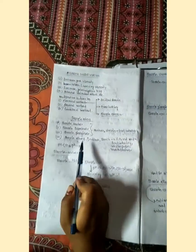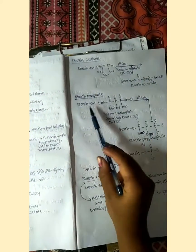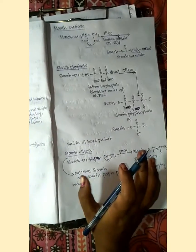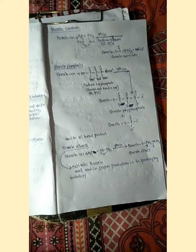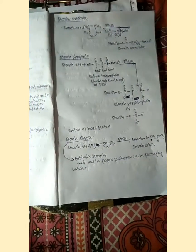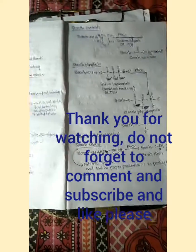So all are complete: starch acetate completed, starch succinate completed, starch phosphate completed, and starch ethers also completed. Thank you for watching this video. I'll be back again with another topic. Bye.